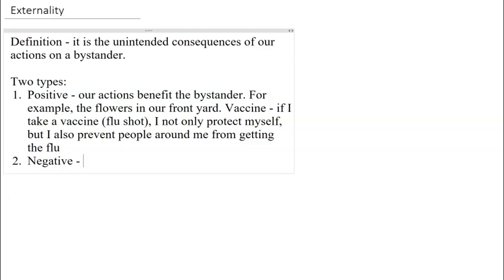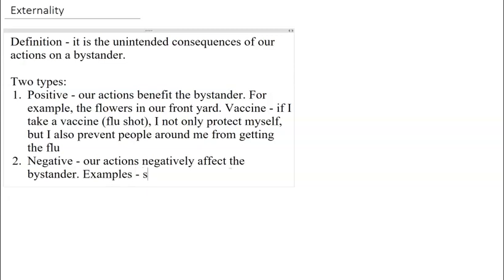A negative externality, on the other hand, is when our actions actually negatively affect the bystander. Negative externalities may have more examples — like secondhand smoking. I may not smoke myself, I may be eating well and exercising and doing everything correctly, but if I hang out with someone who smokes and inhale the noxious vapors from the cigarette, then I also get affected by all those negative consequences, even though I am not smoking myself.